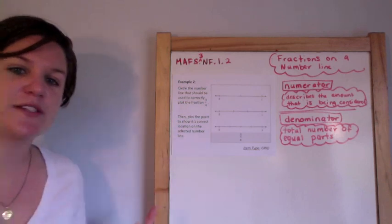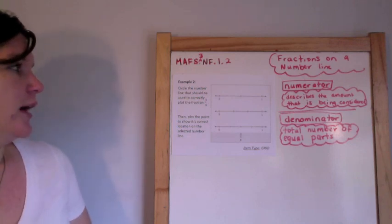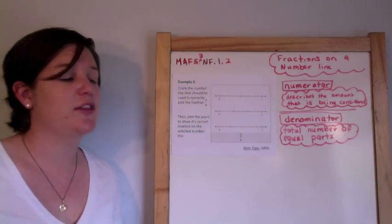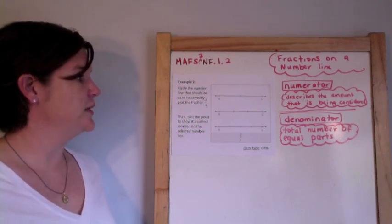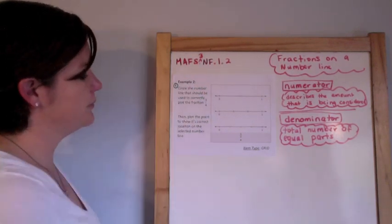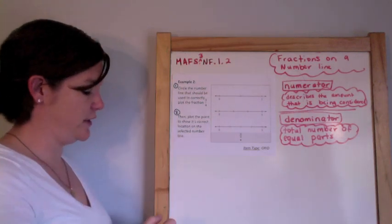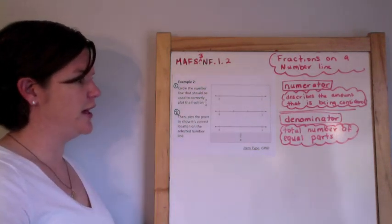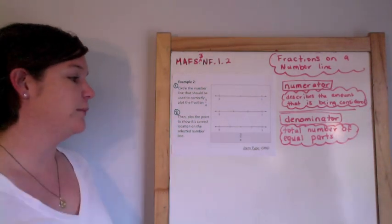So let's continue with example 2. This is a grid item, a graphic response item display. I've said in the past I'm not sure how they grade this on the FSA, but I want to make sure that I include it because they were in those test item specifications. Circle the number line that should be used to correctly plot the fraction 3 fourths. Then plot the point to show its correct location on the selected number line.